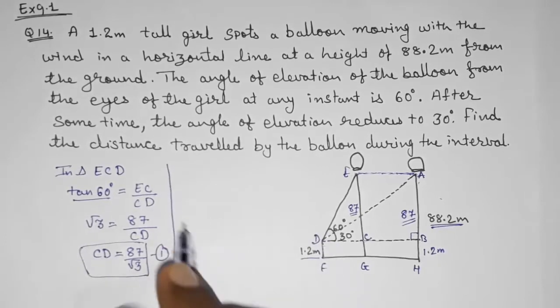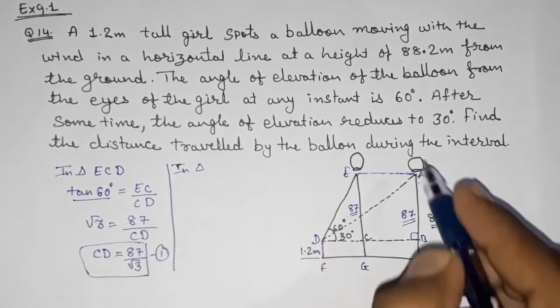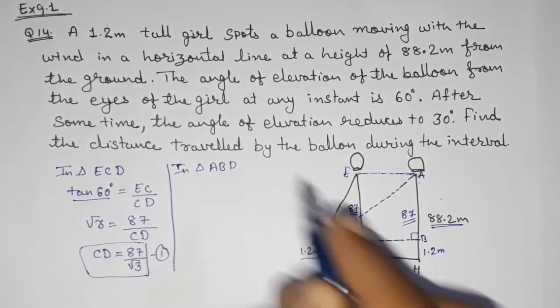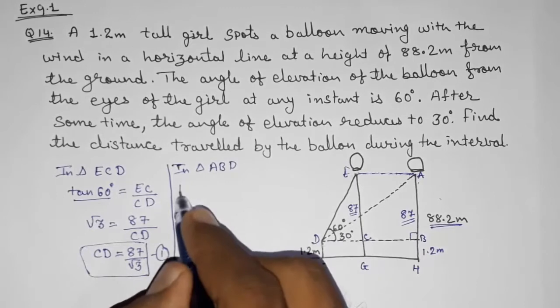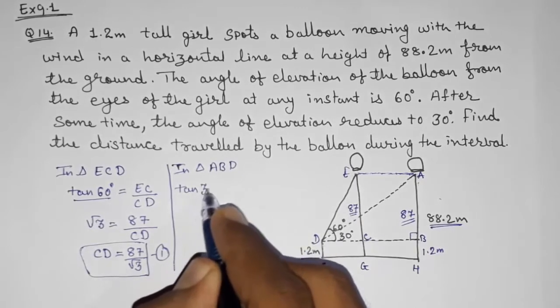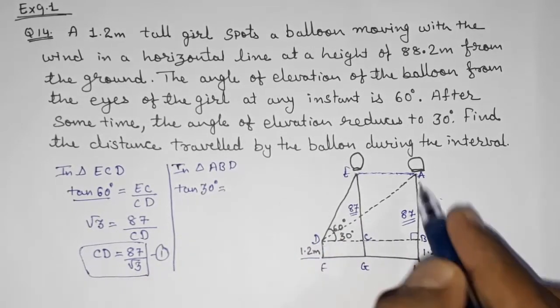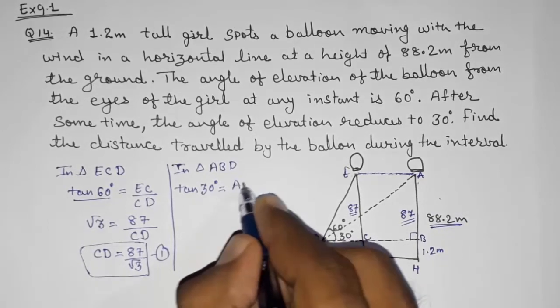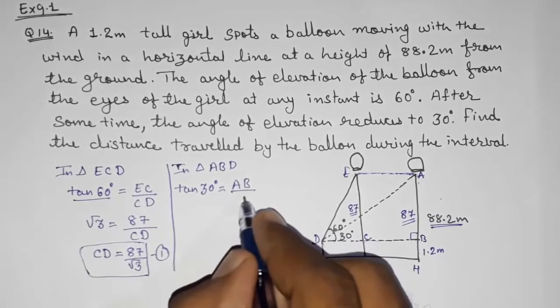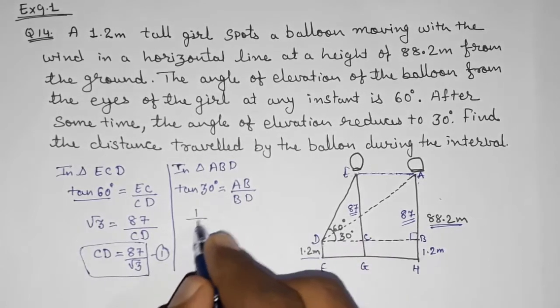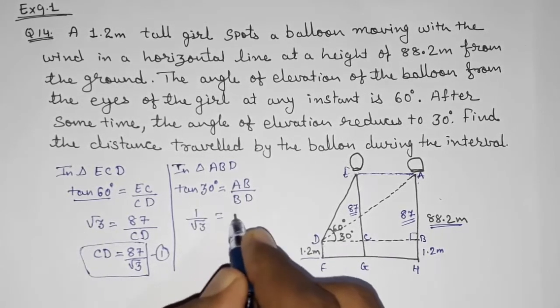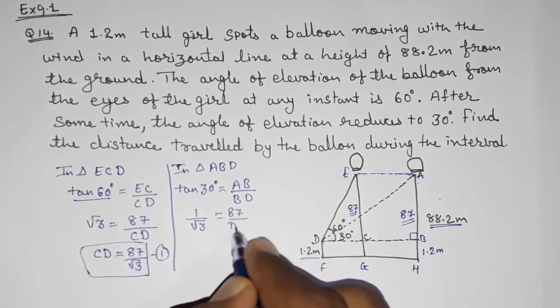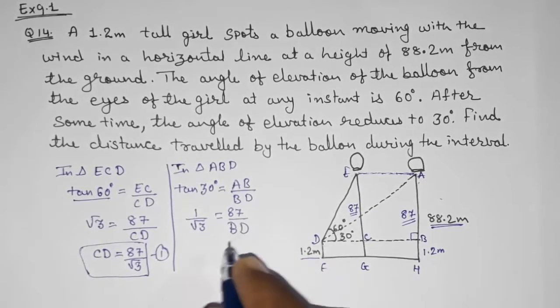Now in triangle ABD, now we are having this angle 30 degrees, so tan 30 degrees is equals to opposite by adjacent, that is AB upon BD. So tan 30 that is 1 by root 3, AB that is 87, and BD that is what we want to find out. So take this here, BD will be equals to 87 root 3. Take it as result number two.